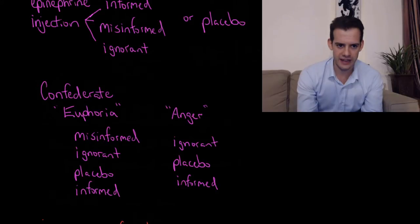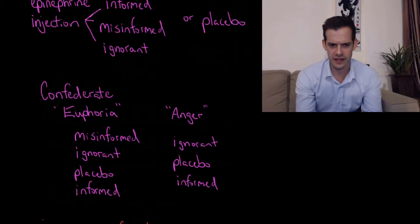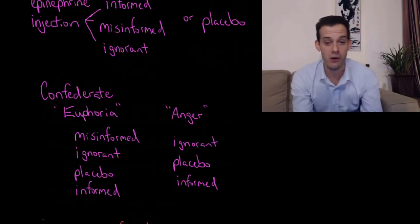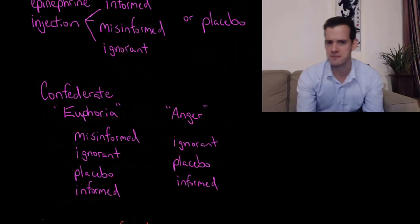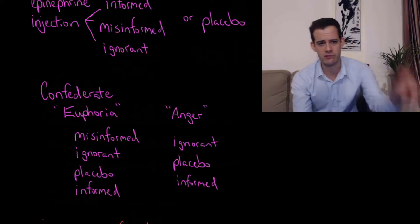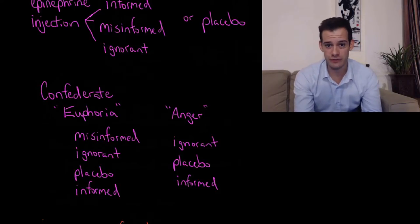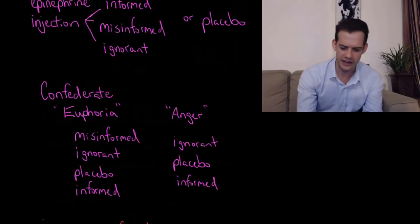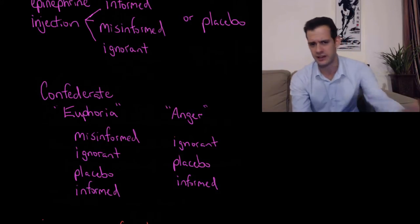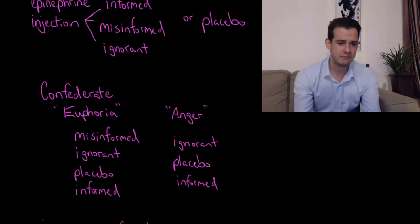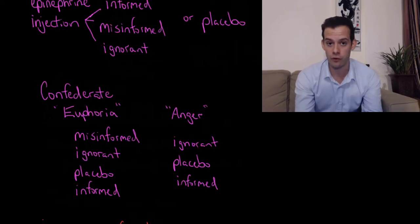They're filling out these forms and they're in this waiting room, and this confederate starts crumpling up some of the papers. There's scrap paper for them to use, and he starts making paper balls and playing basketball with a waste basket. Then he starts making paper airplanes and he even throws one at the participant at some point. He's just acting really sort of giddy and silly. He moves some things around in the room and he finds some hula hoops. He starts playing with a hula hoop, and he tries to get the participant to play with the hula hoop. He's acting in this giddy euphoric way.